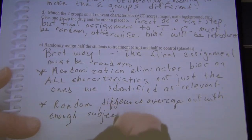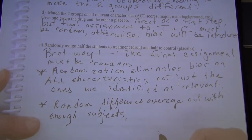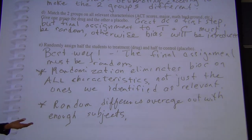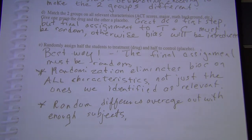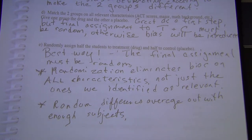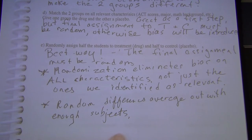Do systematic differences average out? No. The 1-2-3-4 number experiment in a class of 600 people still shows the same results — overwhelmingly choosing three, very few choosing one. Systematic differences don't average out no matter the sample size, but random differences do.